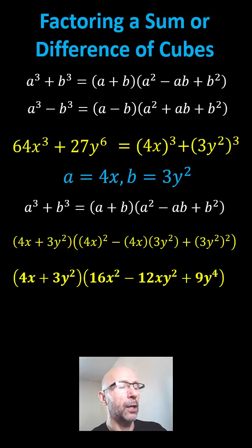We have a binomial factor of 4x plus 3y squared and a trinomial factor of 16x squared minus 12xy squared plus 9y to the fourth.